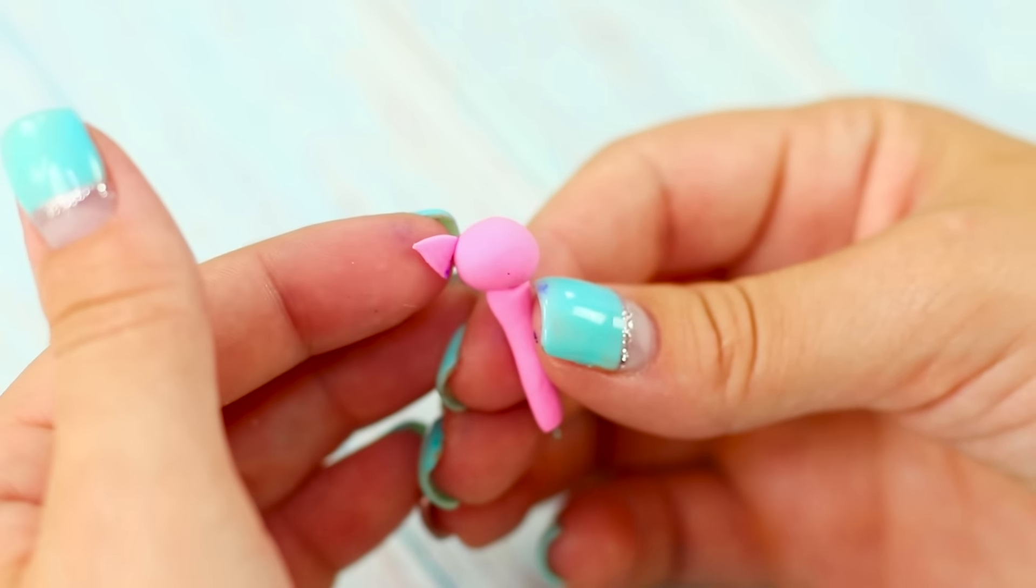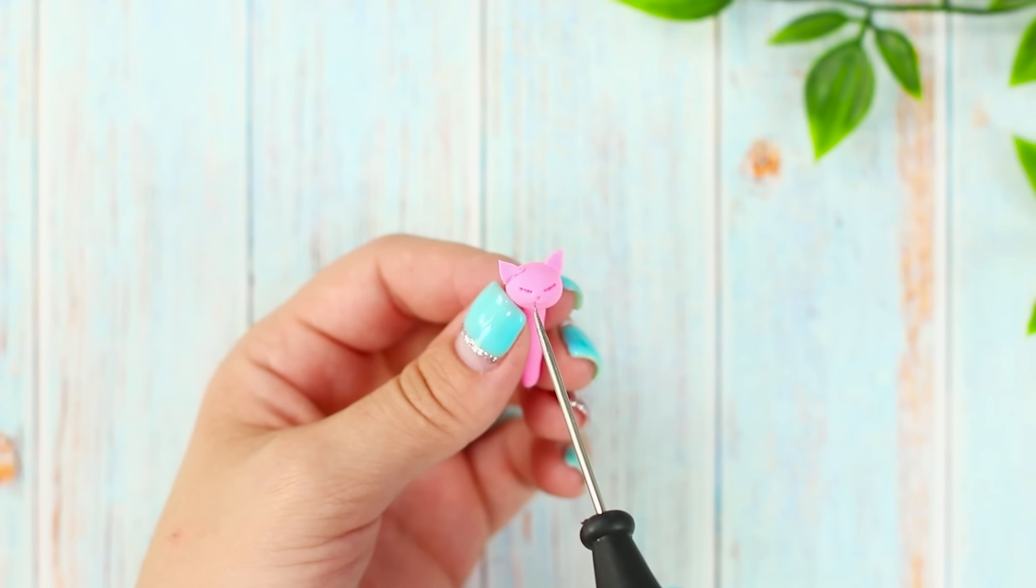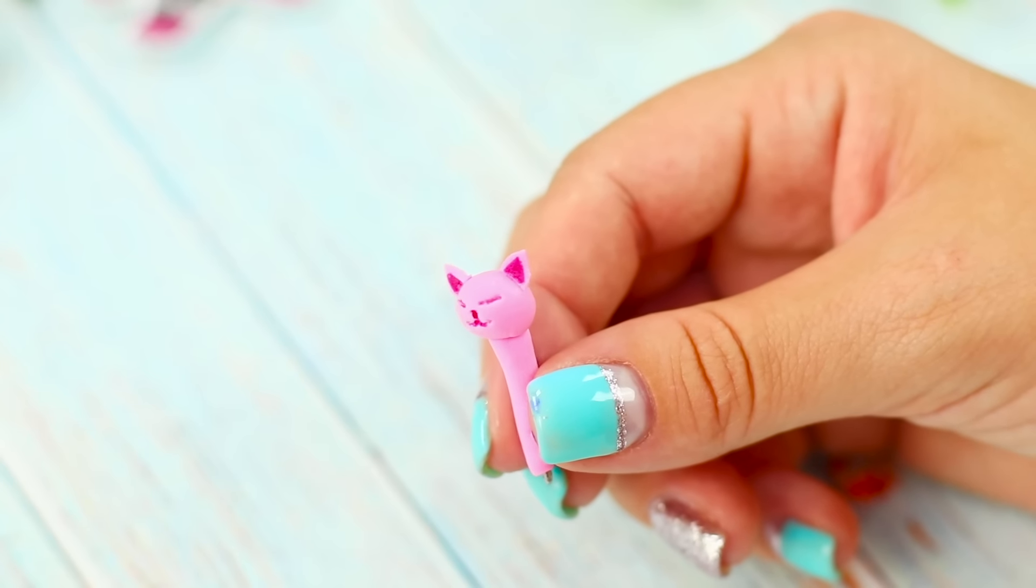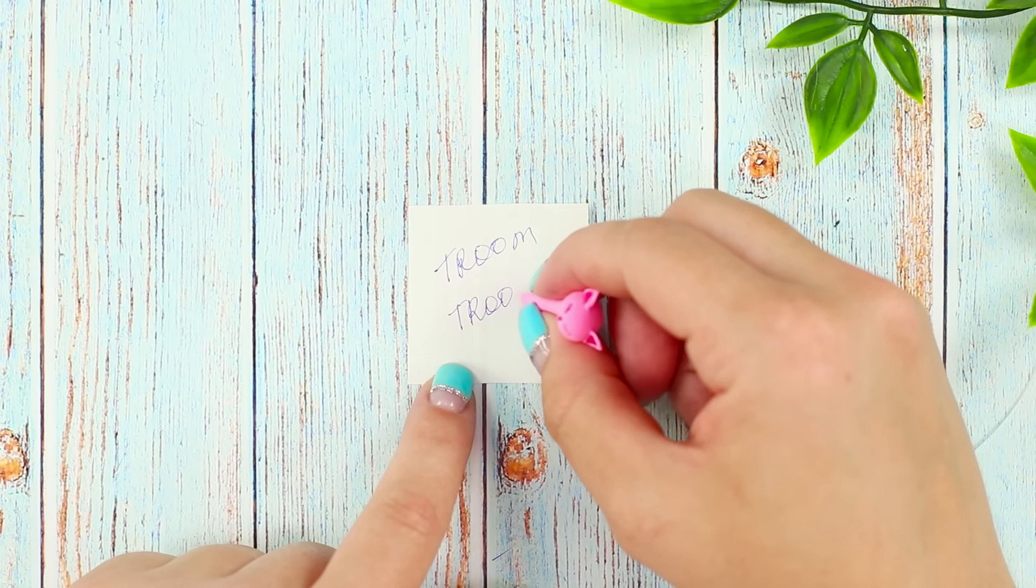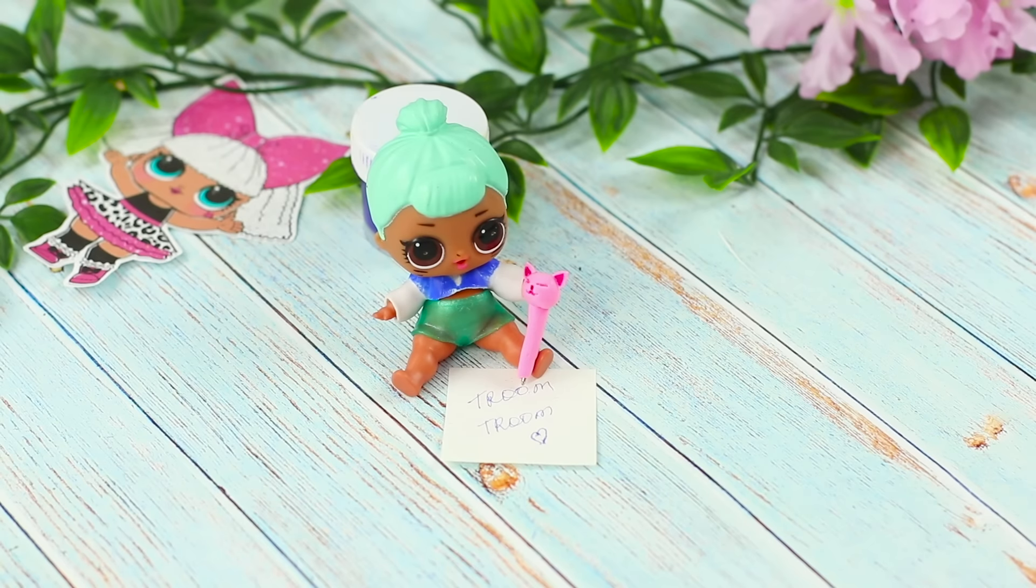Glue ears. Draw a little face using an awl to make a cat. When the clay hardens, you can give the pen to your doll. It's so cute! Let's see what your doll's handwriting looks like!